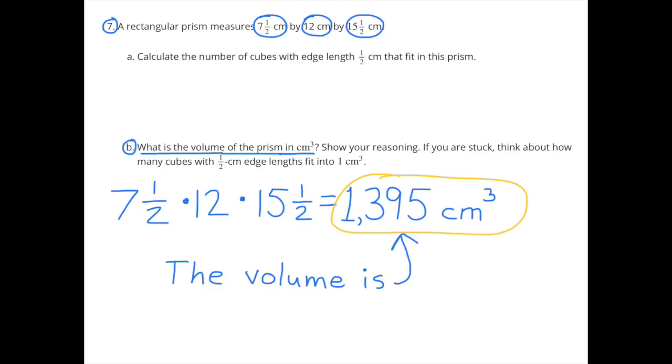Part B: What is the volume of the prism in cubic centimeters? Show your reasoning. If you are stuck, think about how many cubes with 0.5 centimeter edge lengths fit into one cubic centimeter. I already discovered that. The volume is 7.5 times 12 times 15.5, which equals 1395 cubic centimeters.